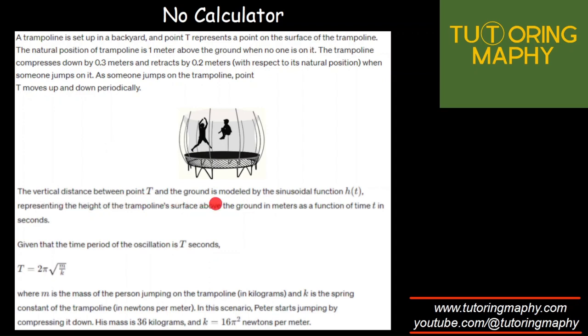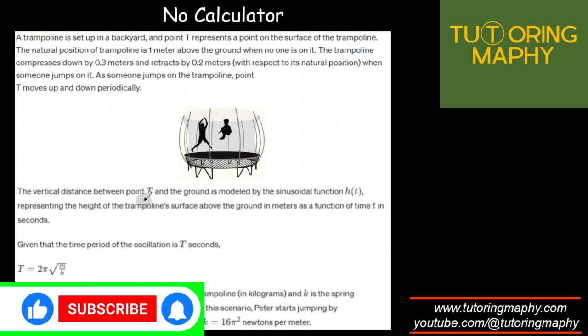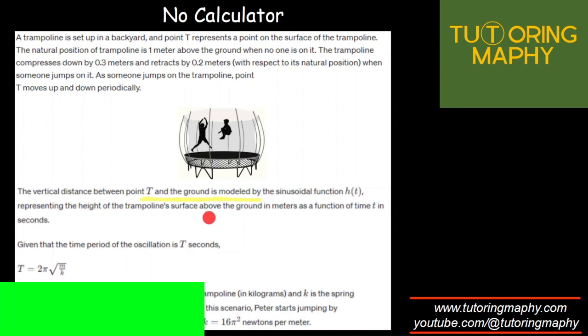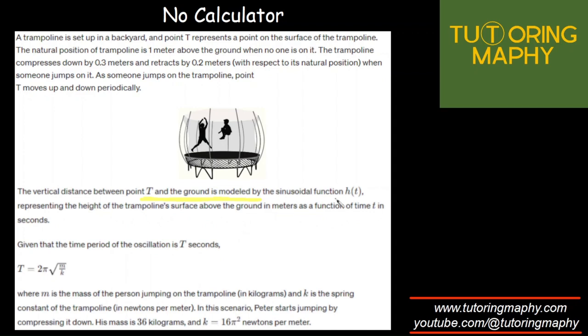The vertical distance between point T and the ground is modeled by the sinusoidal function h(t), representing the height of the trampoline surface above the ground in meters as a function of time t in seconds. The time period of the oscillations is T seconds, where M is the mass of the person jumping on the trampoline in kilograms, and K is the spring constant of the trampoline in newtons per meter. In this scenario, Peter starts jumping by compressing it down, and his mass is 36 kg.